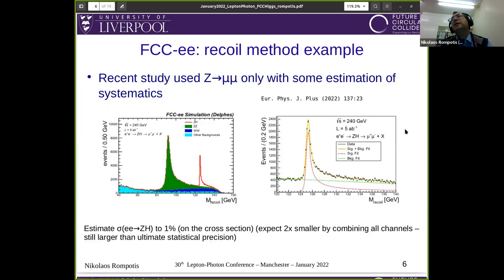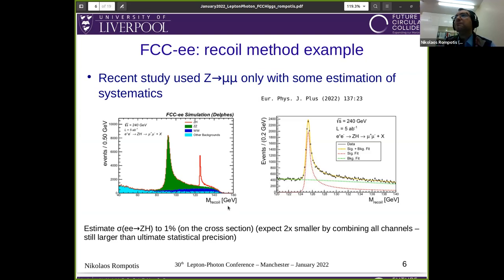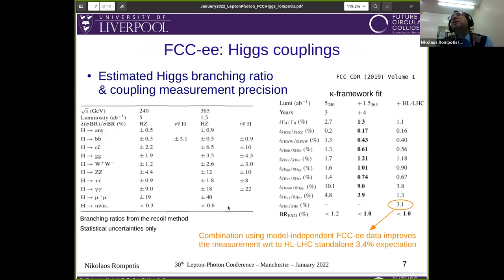A recent result for this recoil method became public just a few months ago, using only Z to mu-mu. The distribution of the recoil mass shows a clear Higgs peak at 125 GeV, which you can fit and estimate the uncertainty on the cross-section production of the Higgs to be about 1%. You can use this recoil method to estimate branching ratio and coupling measurements. You can measure almost everything at percent-level precision, with the exception of rare decays like Higgs to gamma-gamma or Higgs to mu-mu, for which 1 million Higgs decays is not good enough.